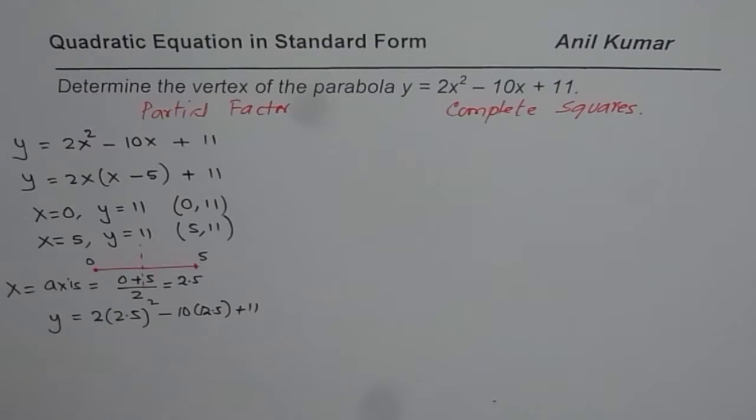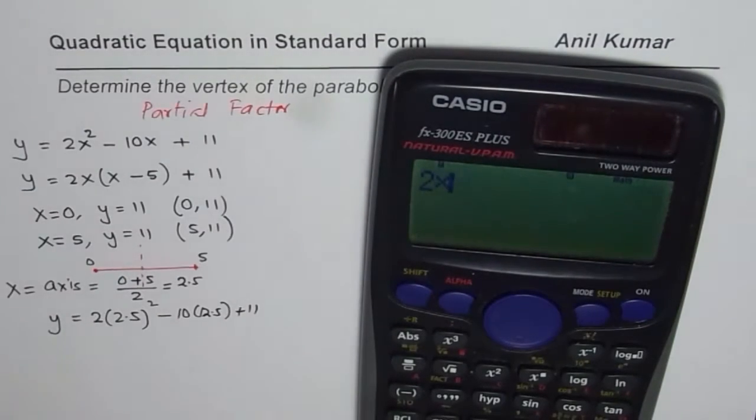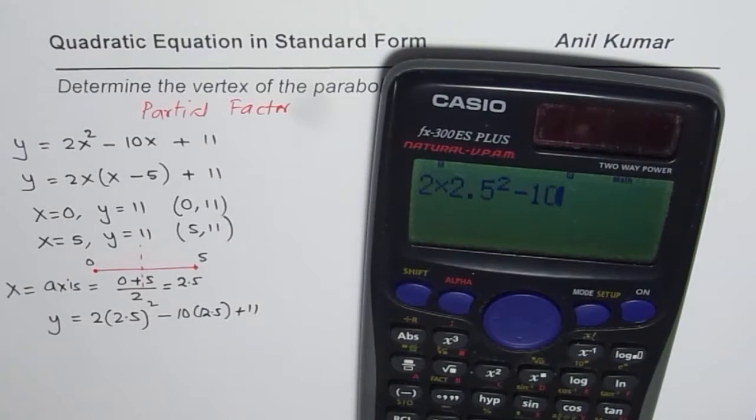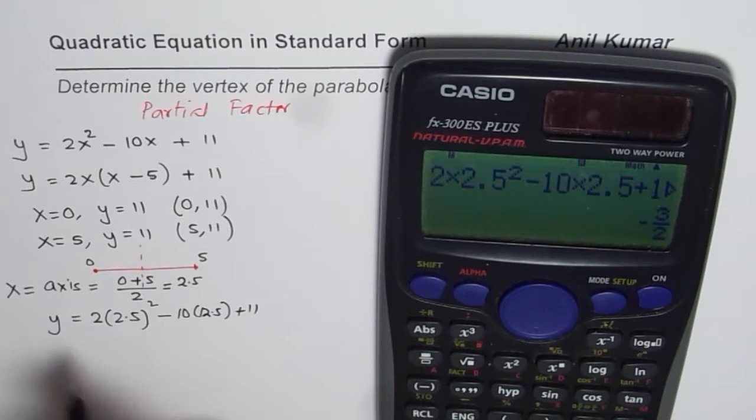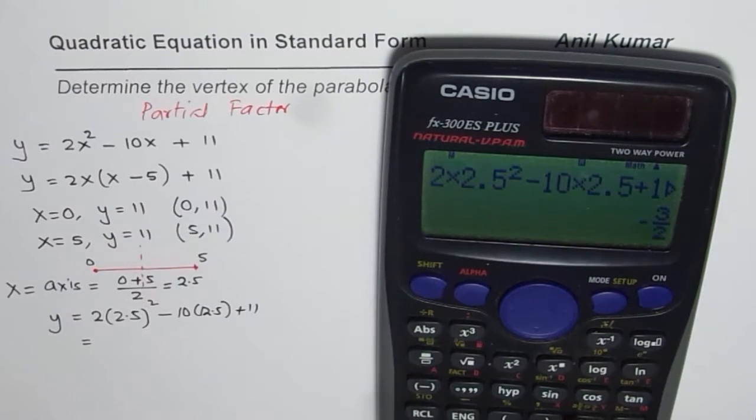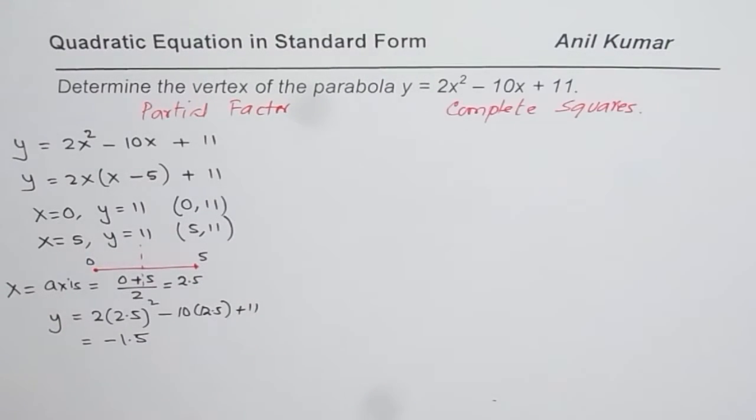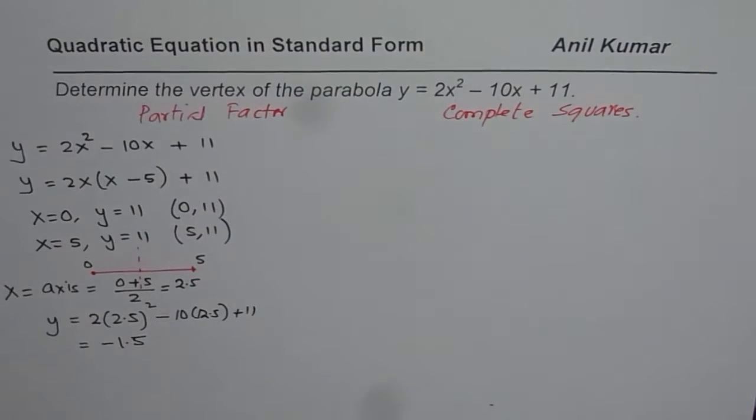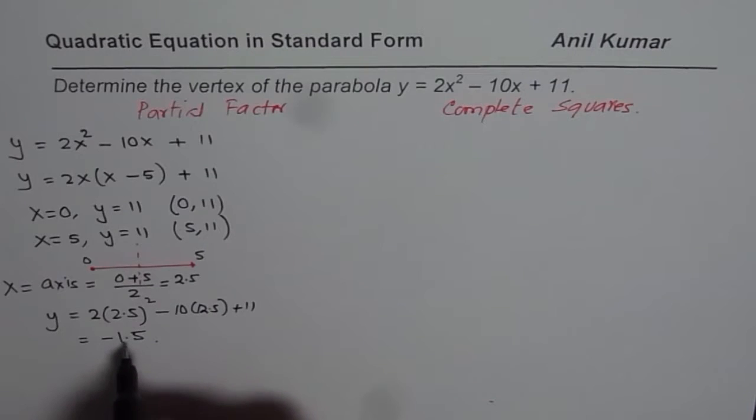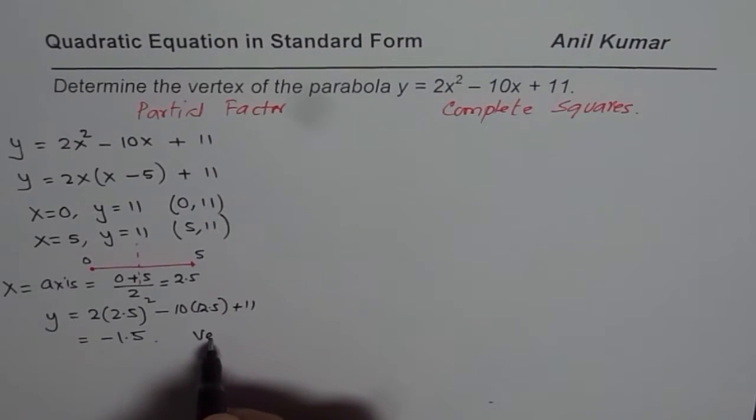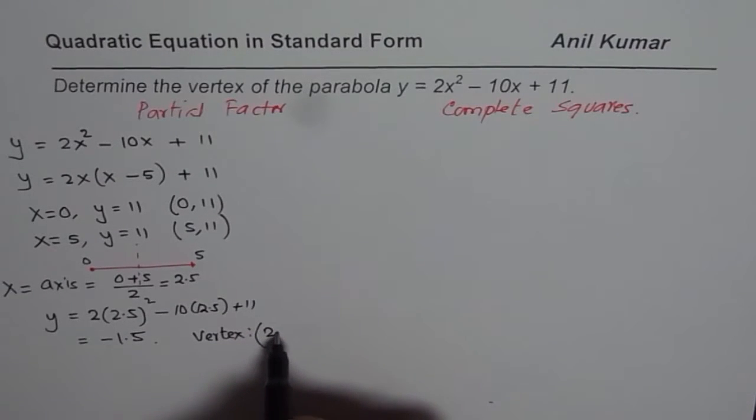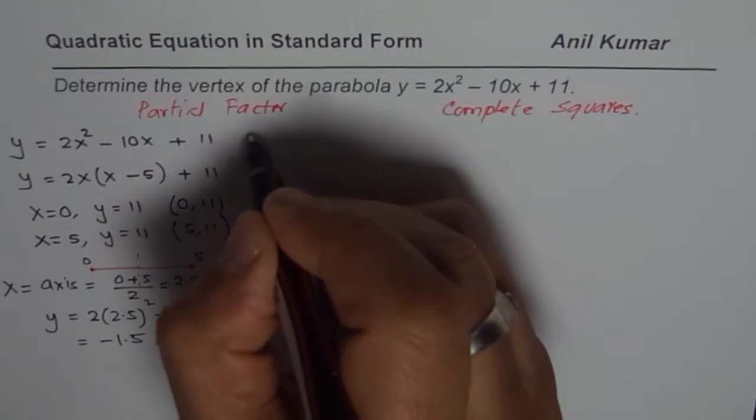Let's use the calculator and calculate the value. So we have 2 times 2.5 squared minus 10 times 2.5 plus 11 equals minus 3 over 2, or in decimals minus 1.5. So we get the minimum value and now we can write down the vertex. Since y is minus 1.5, we can say vertex is at x equals 2.5, the value of y is minus 1.5. So this is one way of finding vertex.